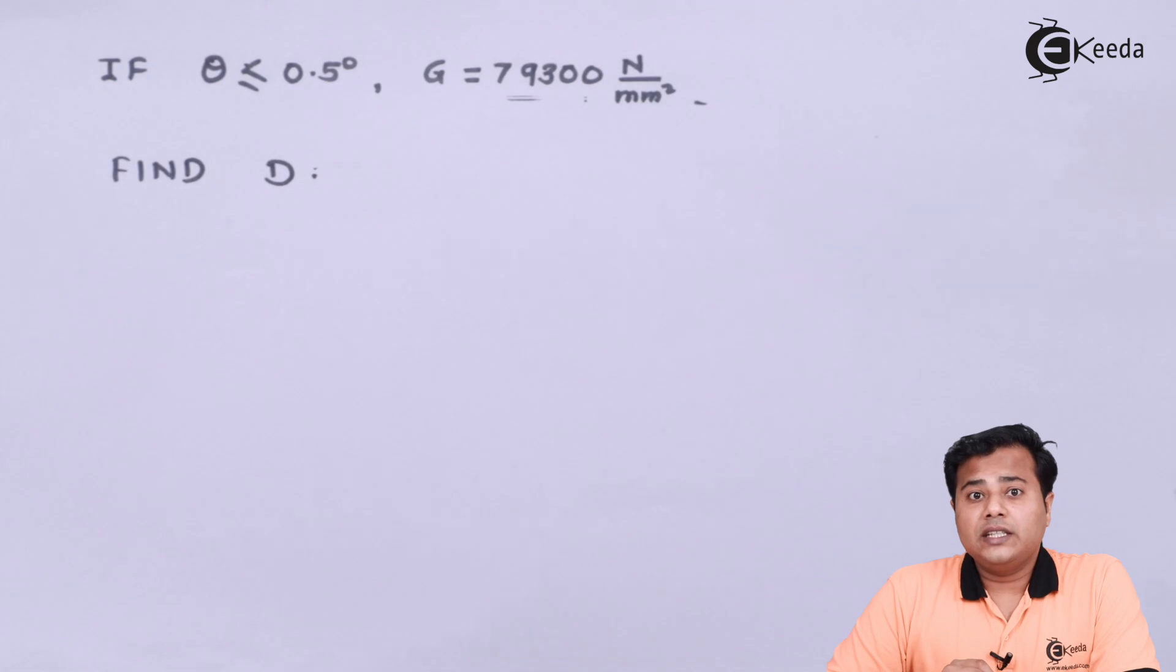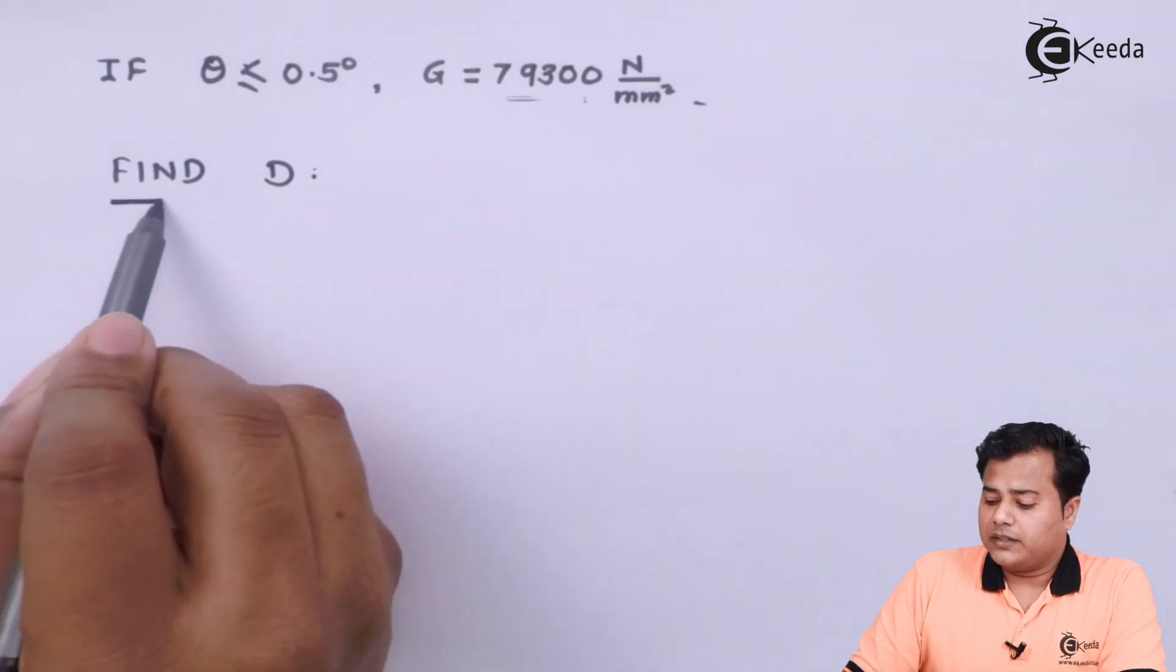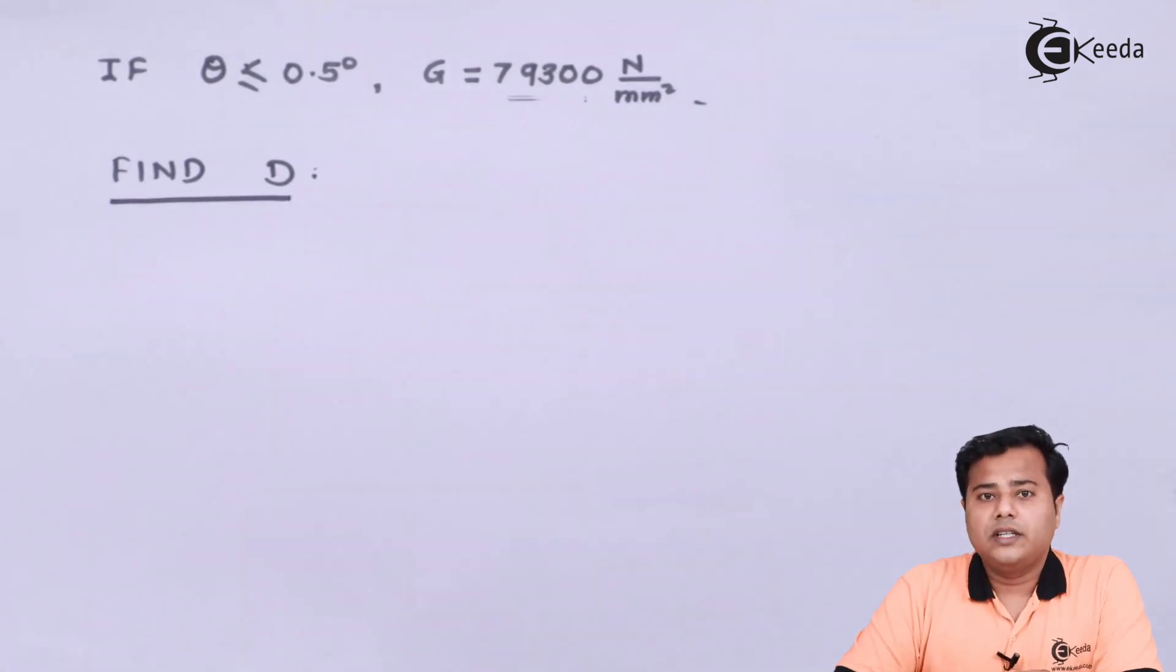So in short we need to design the shaft not only for its bending, not only for torsion, but also its rigidity. We need to find the diameter. That's our problem statement. We already have written down the given data.